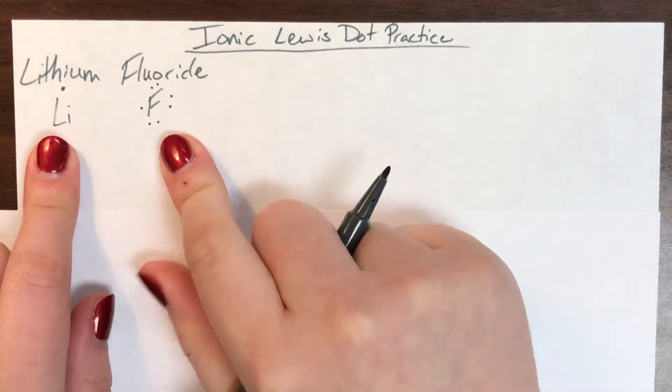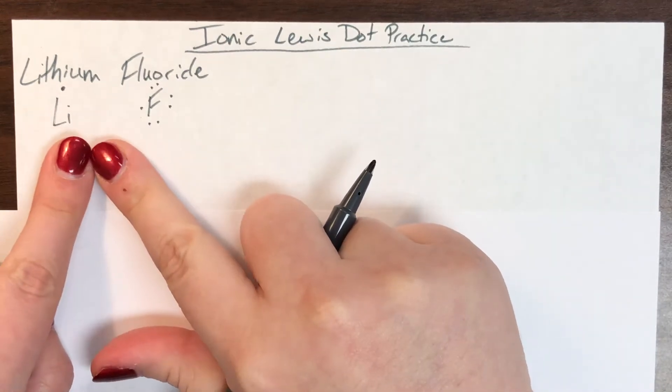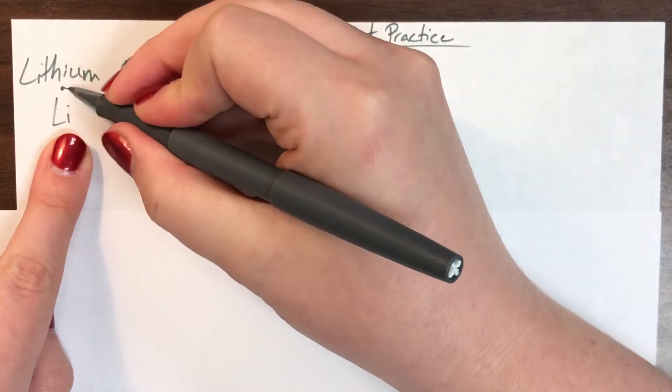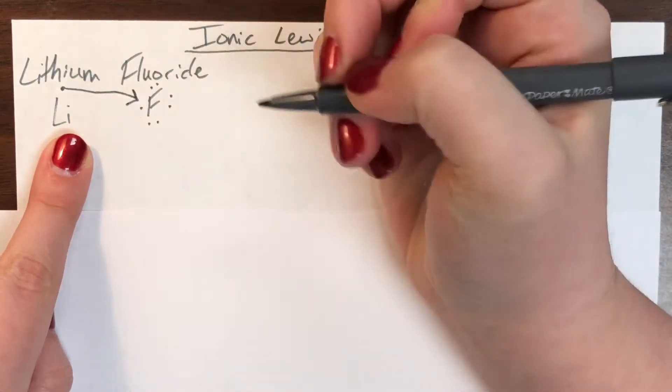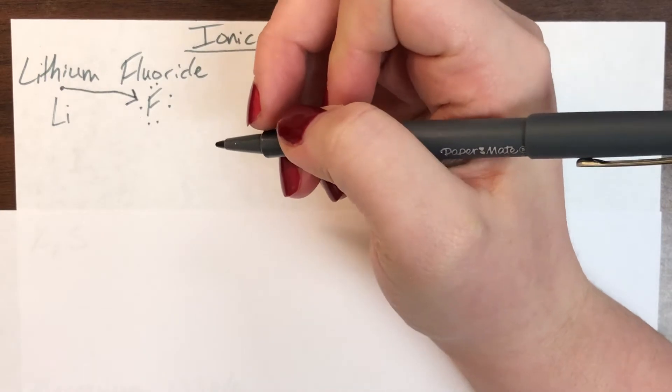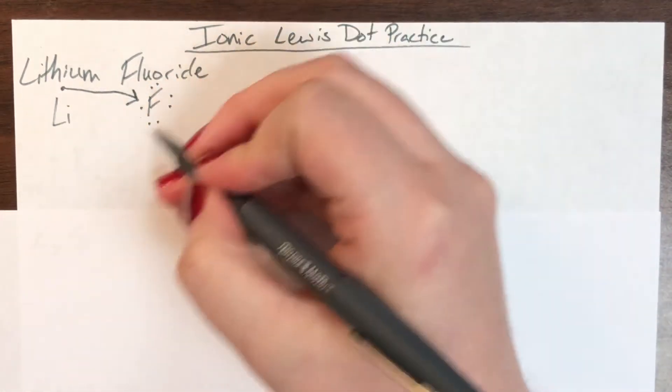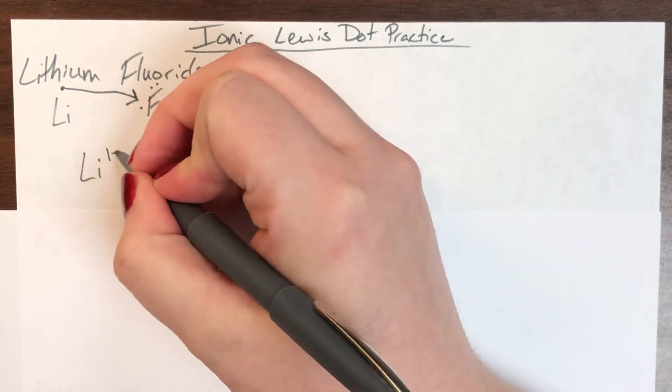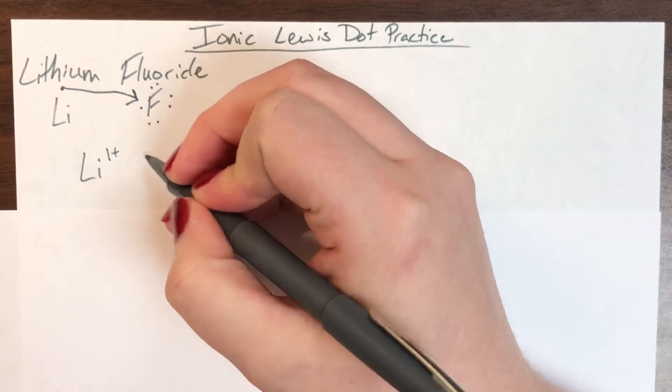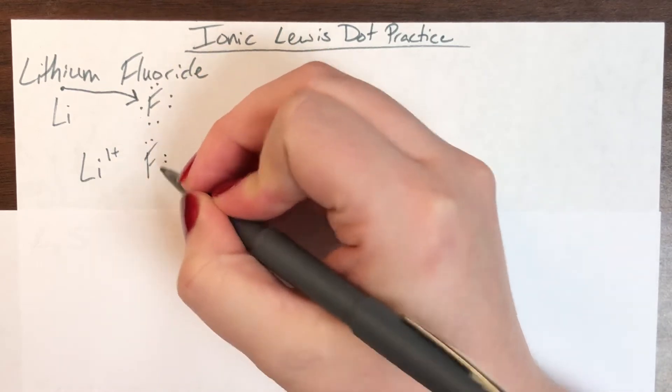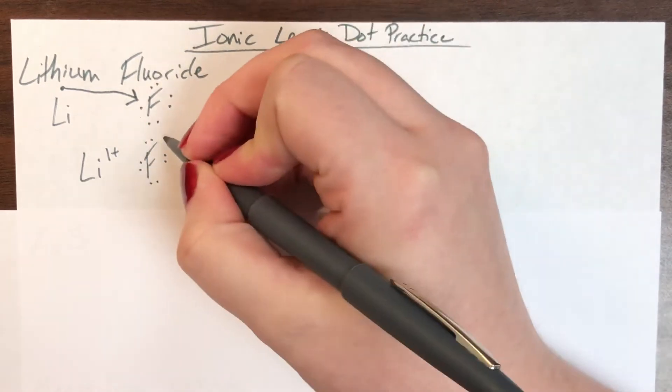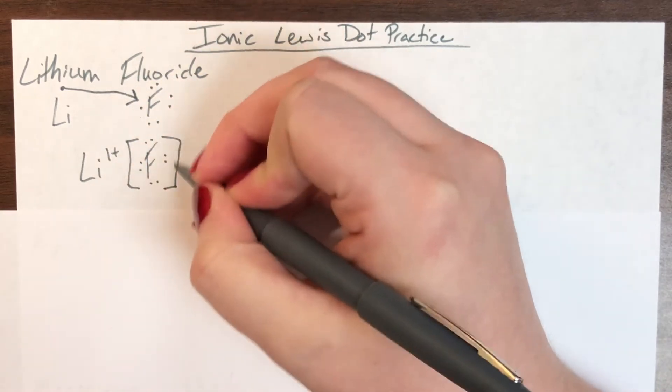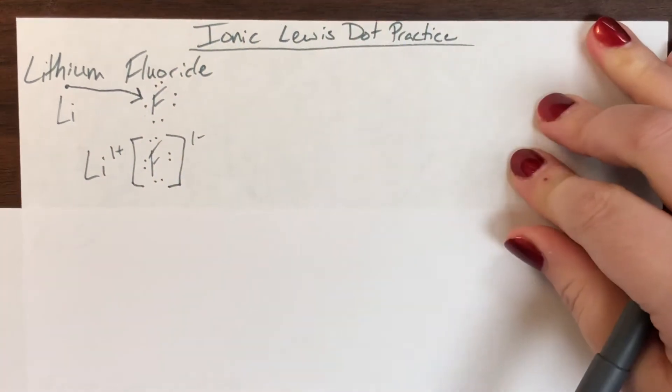Now it's clear from this picture that lithium has significantly less valence electrons than fluorine does so lithium is going to go ahead and donate that electron to fluorine to fill fluorine's octet and I will redraw what the compound will look like afterward. So I will have lithium with now a charge of positive one with no dots and I will have fluorine with eight dots inside of brackets with a charge of negative one.